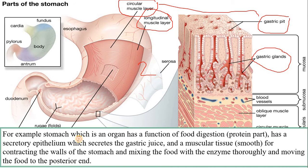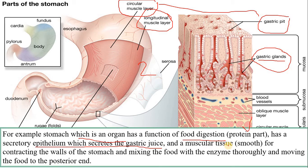For example, stomach, which is an organ, has a function of food digestion — specifically it digests the protein portion of food. It has a secretory epithelium which secretes gastric juice. یہ epithelial cells ہوتے ہیں اس کے اندر جو gastric juice secrete کرتے ہیں، اور یہ کام gastric glands کراتے ہیں۔